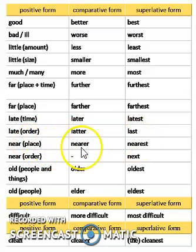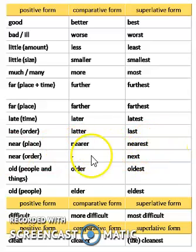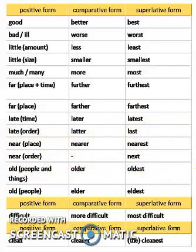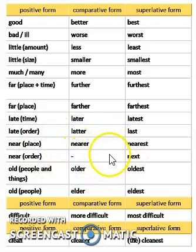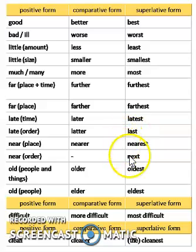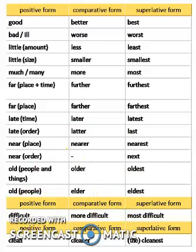Near, nearer, nearest. 'Near' does not have a separate comparative form in the exceptional sense. Then 'next'. And 'old' — I have already told you about that.